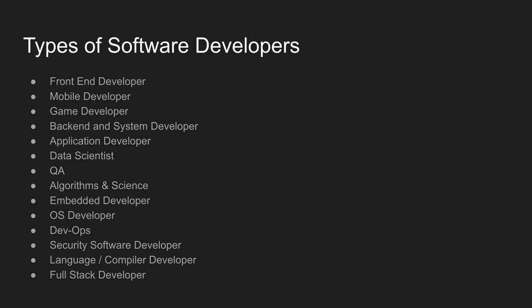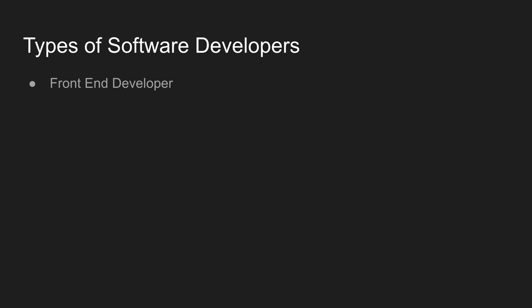Next, full stack developer. There is no strictly separate role — full stack developers are a mix of all developer roles. They can develop and deploy an application from scratch to end. There is high demand for full stack developers. So there are many different types of software developers — identify your category, focus on it, and prepare accordingly. Thanks for watching this video.